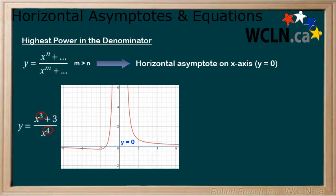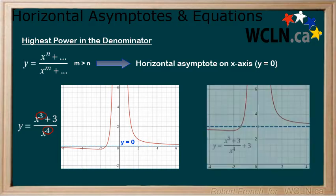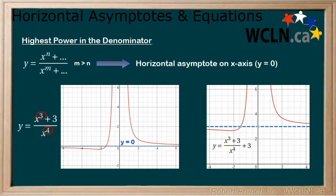There is a case, though, where the horizontal asymptote may not be at y equals zero. This is when there is a vertical translation. Think back to when you learned about transformations and vertical translations. This will usually look like a number being added or subtracted after the main expression and will move the function up or down accordingly. Here is a horizontal asymptote at y equals three after a vertical translation of three up, as seen here.